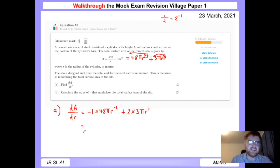Now we just need to tidy this up and make sure it looks as it needs to for the exam. So minus 1 times 48 gives you minus 48π r to the minus 2, plus 6πr. And we are done. You'll see the mark scheme, they also write this as minus 48π over r squared. That's perfectly fine as well. Okay, three marks in the bag.